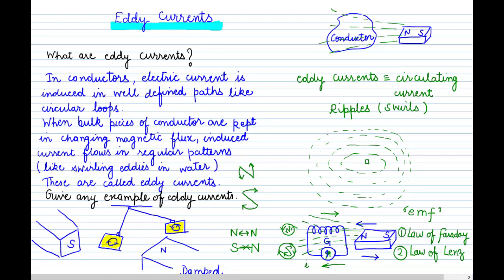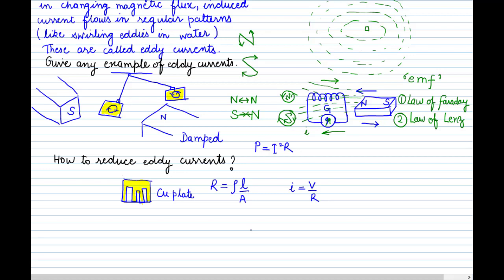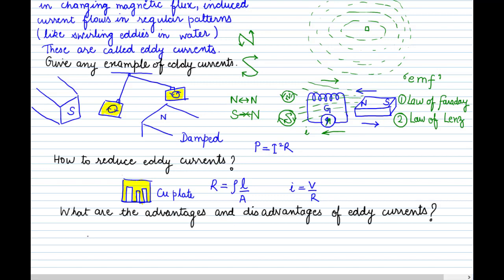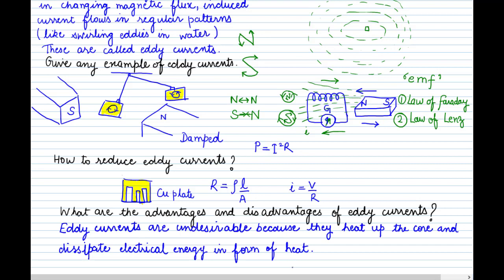Now, what are the advantages and disadvantages of eddy currents? As seen in the copper plate example, eddy currents cause trouble by producing unwanted heat — whatever energy is present is dissipated as heat due to eddy currents. So eddy currents are undesirable because they dissipate electrical energy in the form of heat. This heat loss is given by P = I²R.